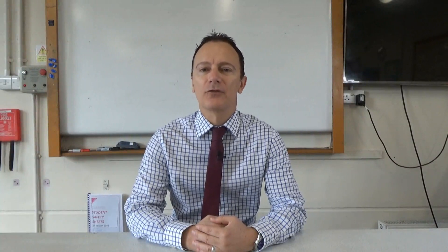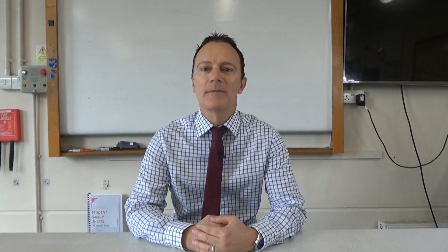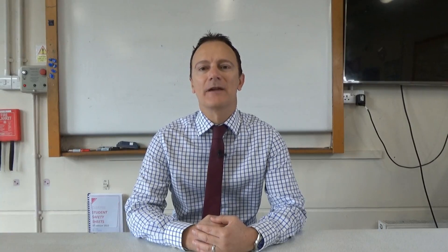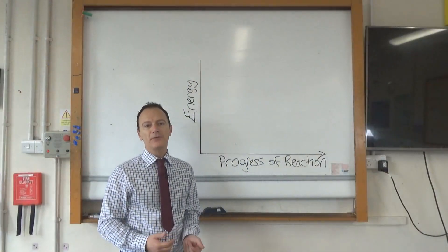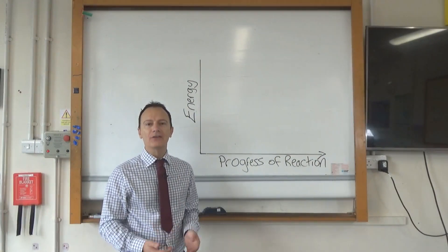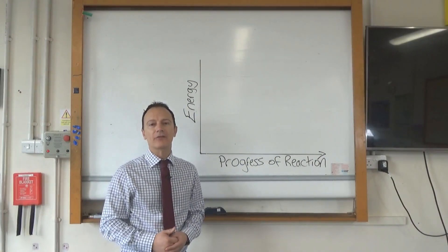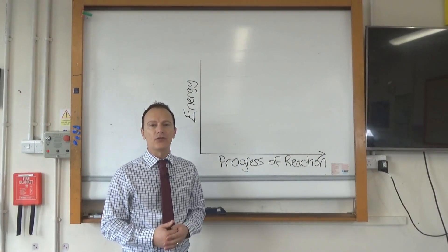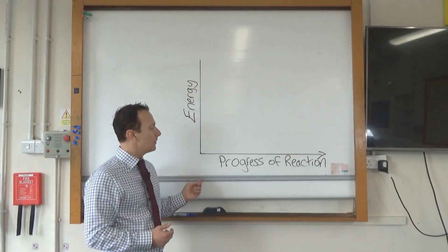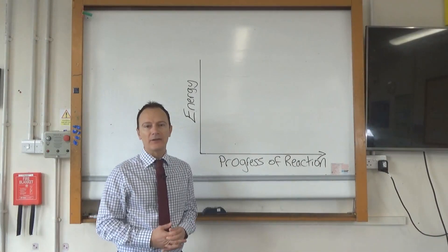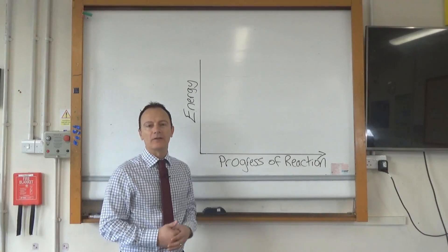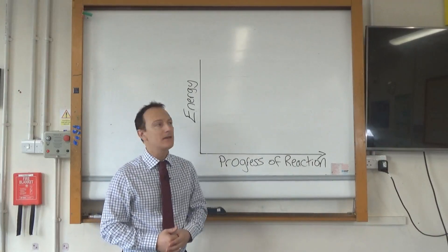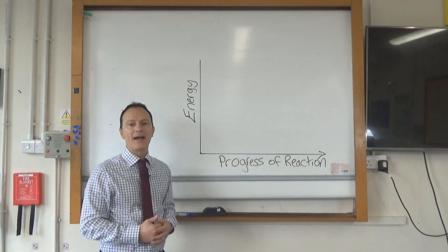Hi everyone and welcome to Revised Chemistry with Mr B. In this video I'm going to show you how to draw and label reaction profiles for both exothermic reactions and endothermic reactions. Whether we're drawing a reaction profile for an exothermic or an endothermic reaction, we always start off by drawing the two axes. Along the bottom we have progress of the reaction — as time goes on and the chemicals are reacting together — and up the side we have energy.